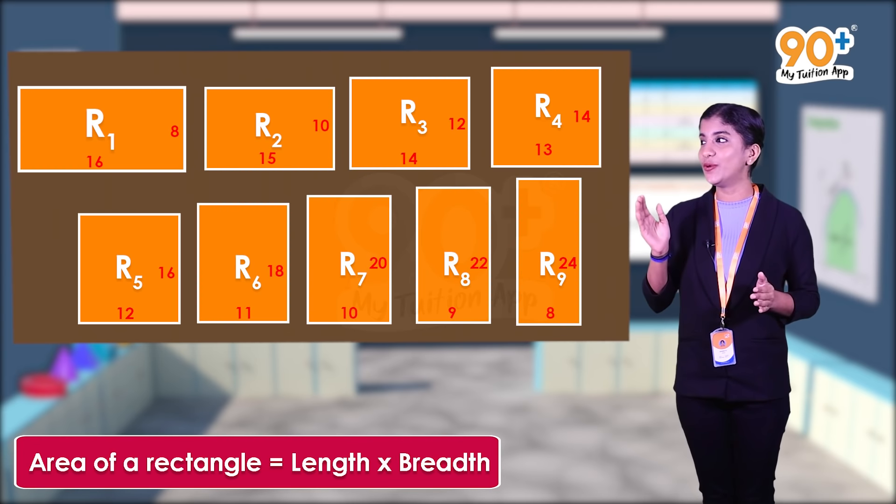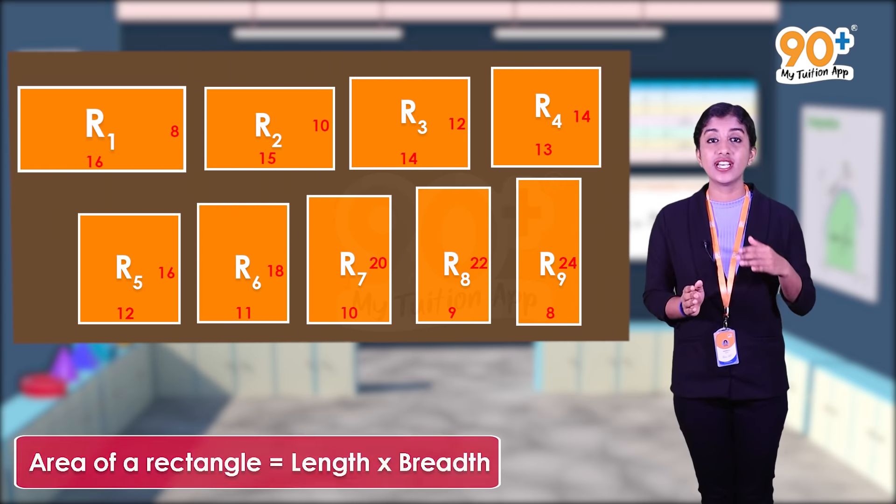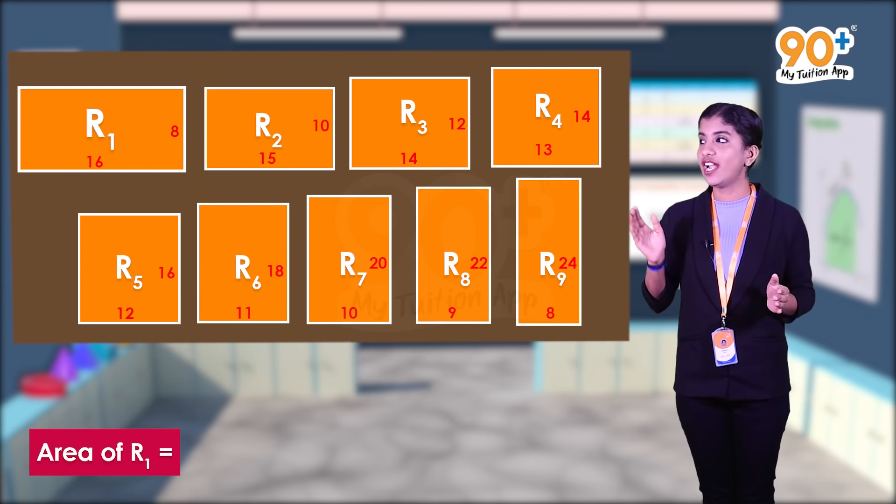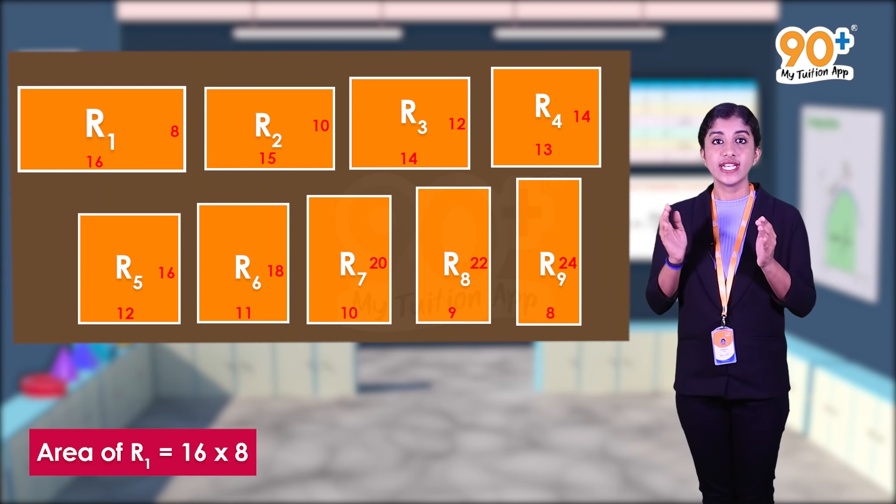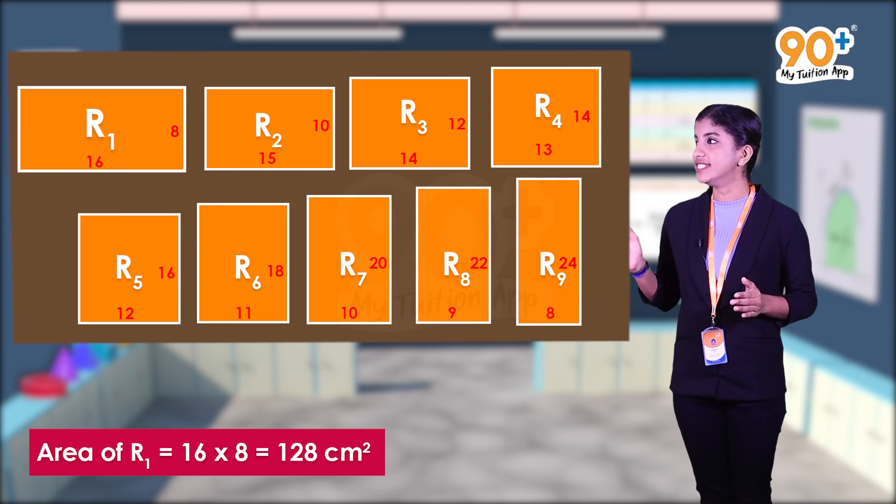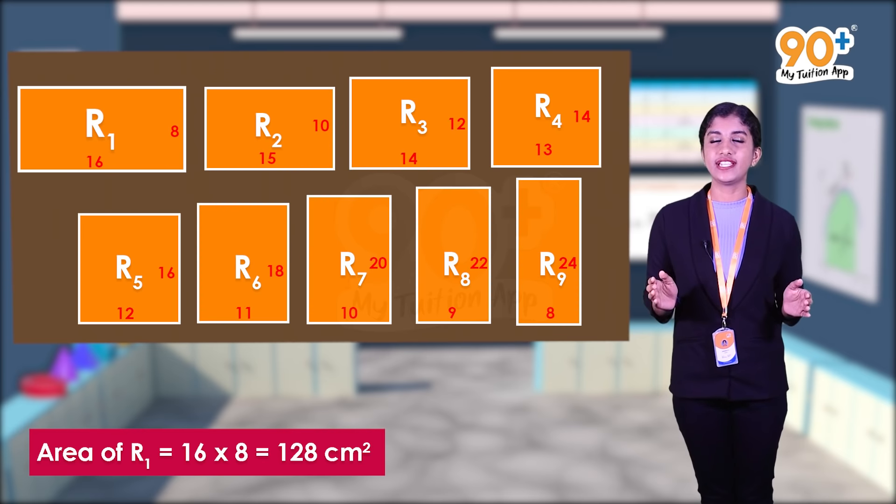So area of rectangle r1 is equal to 16 into 8, which is equal to 128 centimeter square.